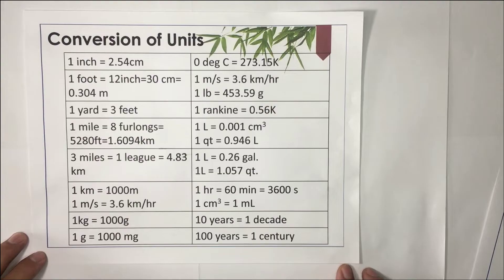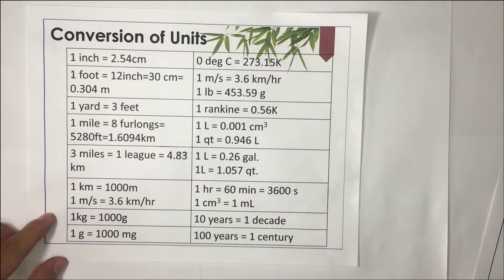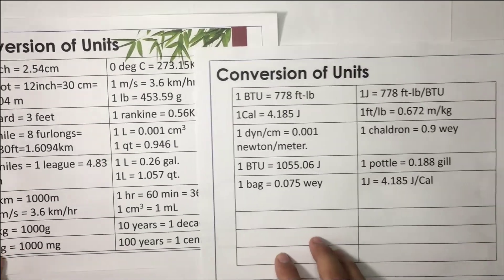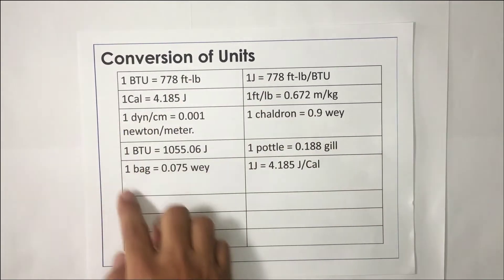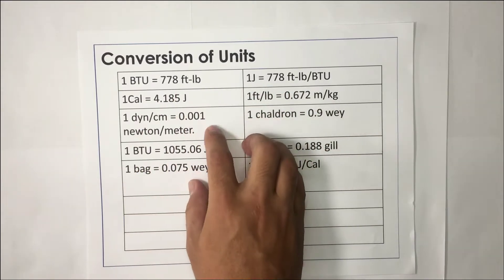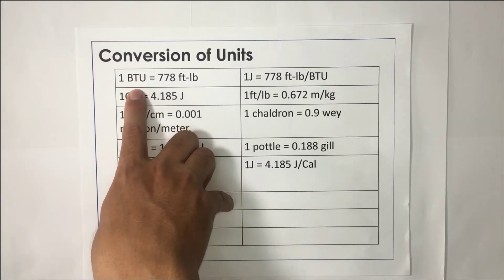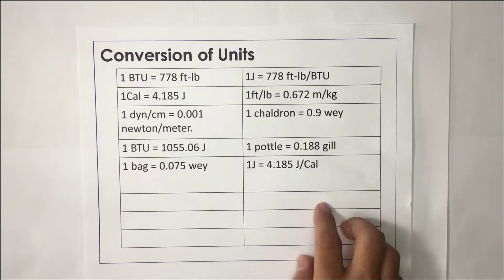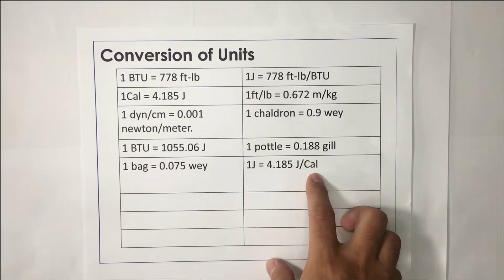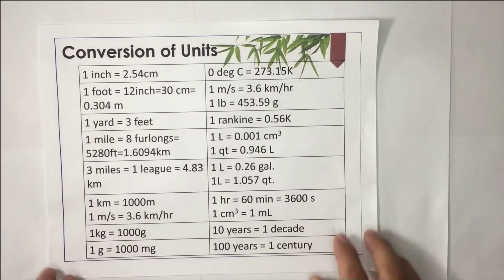For example, 1 inch is equivalent to 2.54 cm. Instead of doing the long method, we will be using a conversion table. Another table is for the English unit or the British Engineering System. I list a few units that are commonly used in physics, such as BTU — which stands for British Thermal Unit — joule per calorie, watt, and so on.